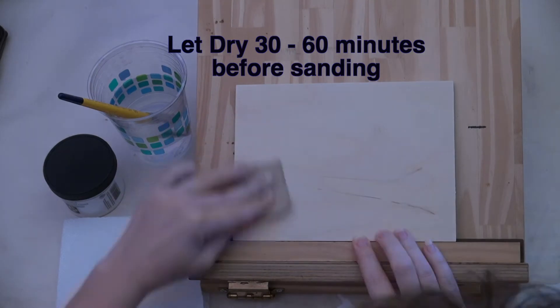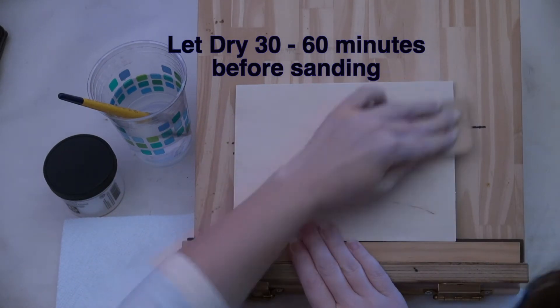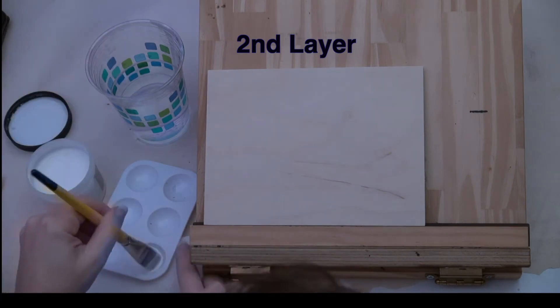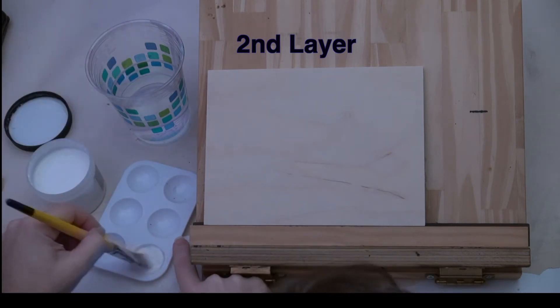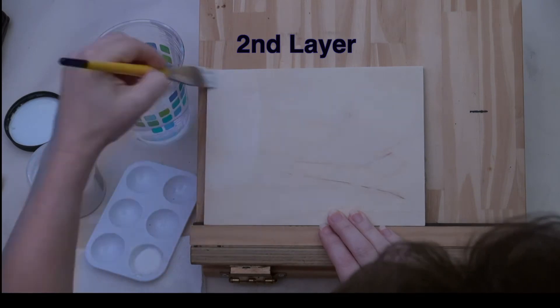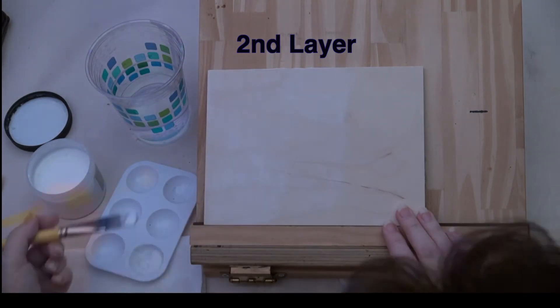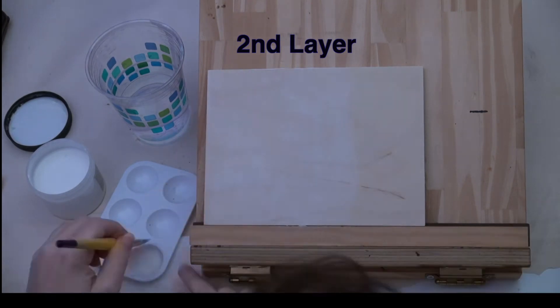Very lightly sand over the board with at least 300 grit sandpaper. For the second layer put some of the grounds into a mixing tub and add a little water to thin the grounds. Then apply the grounds to the board. Note that you do not pre-wet the board first.